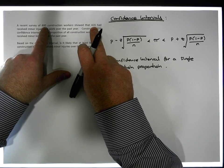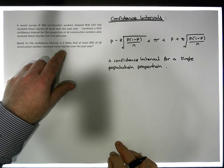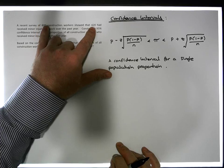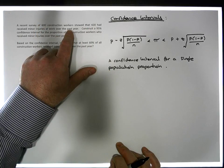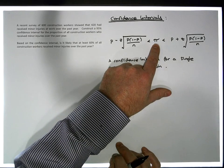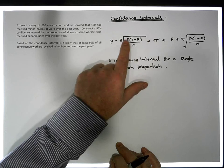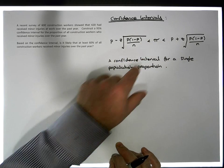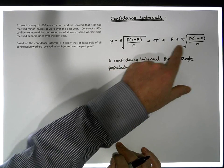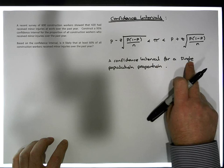Based off that sample information — 600 workers, 420 of them with injuries — we're being asked to construct a 95% confidence interval for the proportion of all construction workers who received minor injuries over the past year. We want to find a lower bound and an upper bound such that we're 95% confident the true population proportion will lie between them. This is the formula we use for constructing a confidence interval for a single population proportion.